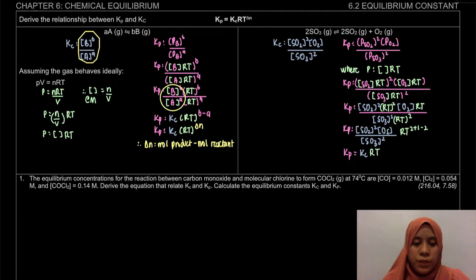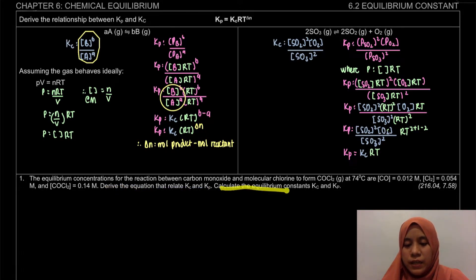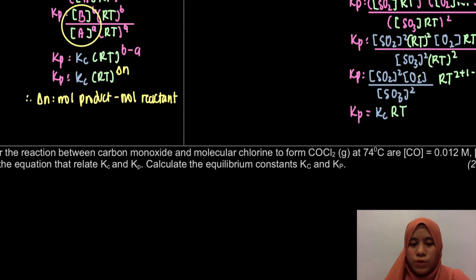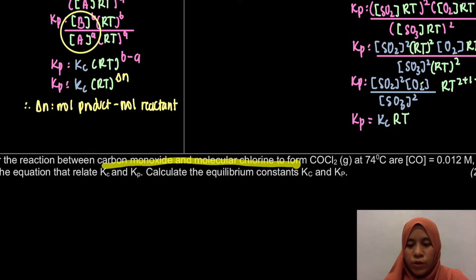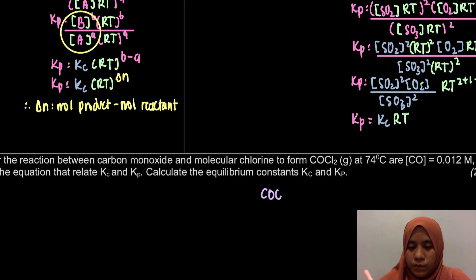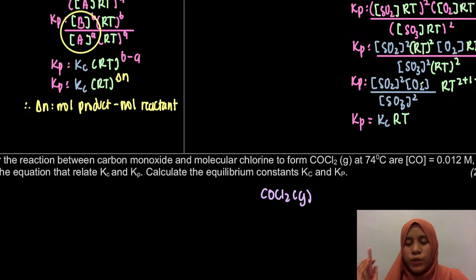Let's look at the example. The equilibrium concentrations for the reaction between carbon monoxide and molecular chlorine to form COCl2 gas are given. The question asks you to derive the equation relating Kc and Kp, and then calculate the equilibrium constant. Here, we have to write down the equation ourselves — COCl2 is our product.